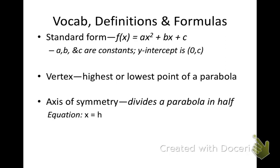Your vertex is the same as the last concept — it's the highest or lowest point of a parabola. We're going to be talking about the axis of symmetry again, which is that imaginary line that divides the parabola in half. It is in the equation form x equals whatever the h value is, which is the x value of the vertex once we find it.